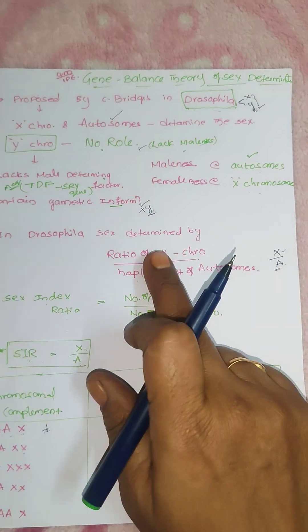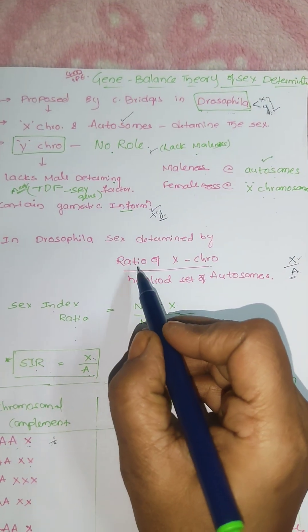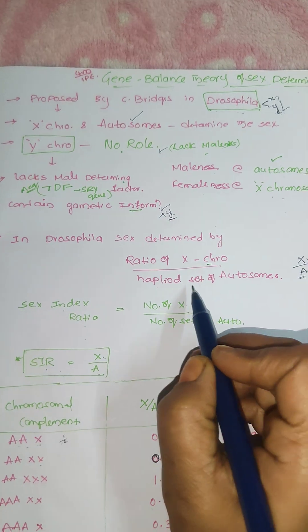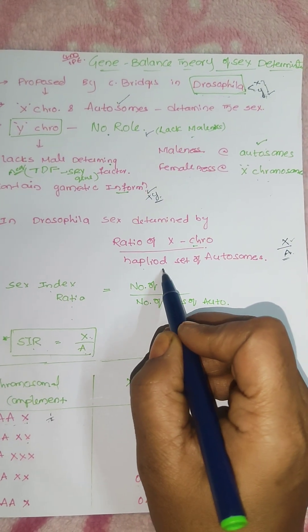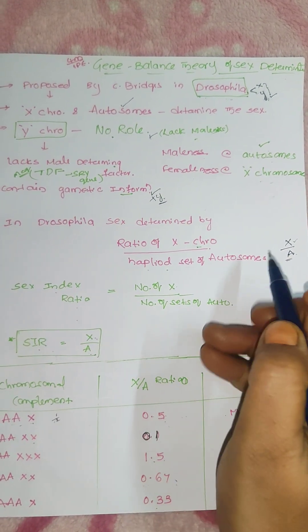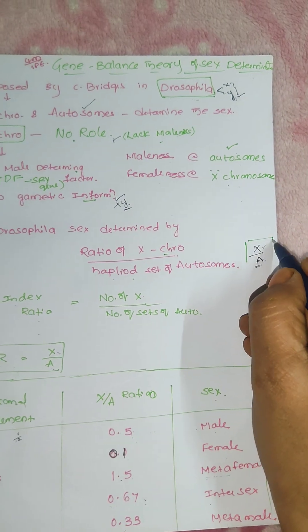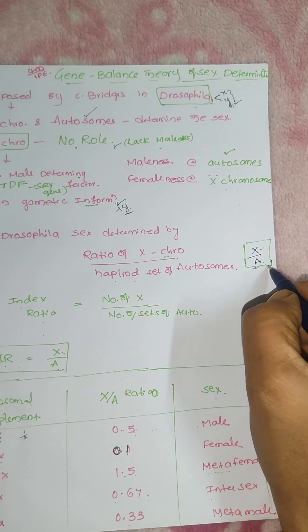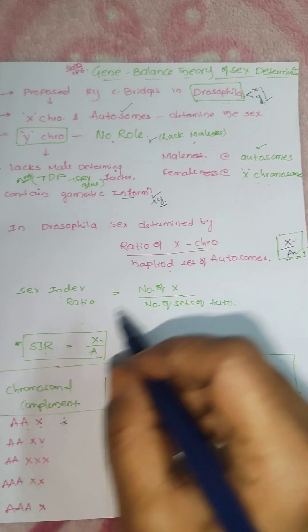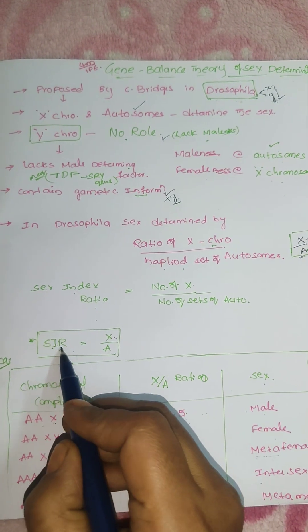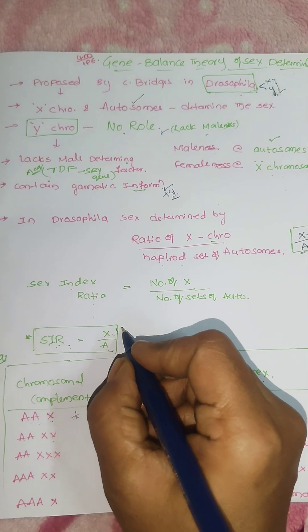In Drosophila, the sex is determined by the ratio of X chromosomes and by the ratio of haploid set of autosomes. Simply it is X by A, number of X chromosomes by the number of autosomes, that is called sex index ratio, SIR. This is also MCQ.